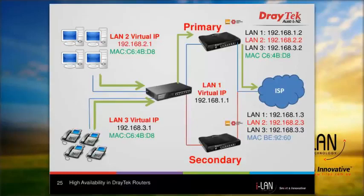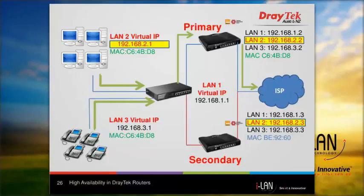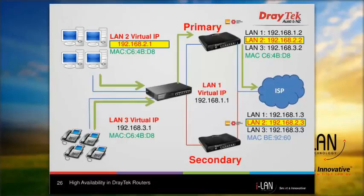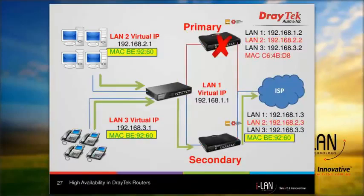In the network topology shown in the diagram, although the primary and secondary routers have different LAN IP and MAC addresses, all LAN clients use the virtual IP as the gateway. For example, the primary router has LAN 2 IP address 192.168.2.2 and the secondary router has LAN IP address 192.168.2.3. The virtual IP address is set up as 192.168.2.1, and this is used by devices on LAN 2 as the default gateway. When hardware failure occurs and the primary router goes offline, the secondary router takes over and updates its MAC address to the LAN clients, so the virtual IP address will now have the MAC address of the secondary router.